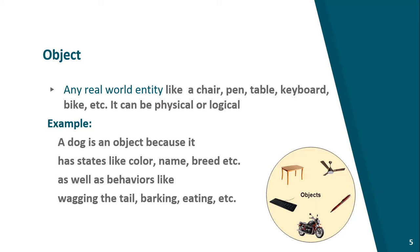For example, there is a dog's object, which is an object. Because it has a special color, it has a specific name, it has specific activities like eating, sleeping, and walking. So, this is the object.